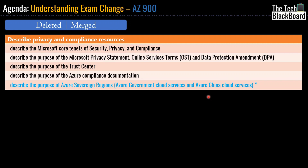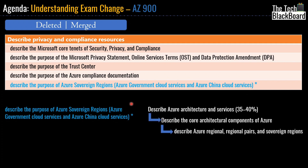The second section missing after 5th of May will be Describe Privacy and Compliance Resources — those topics will be completely removed. However, one topic highlighted in blue — Describe the Purpose of Azure Sovereign Regions, Azure Government Cloud Services, and Azure China Cloud Services — is not completely removed but merged into another section. It will now be present under Describe Azure Architecture and Services, within the subheading Describe the Core Architectural Components of Azure, specifically as Describe Azure Regional Pairs and Sovereign Regions.